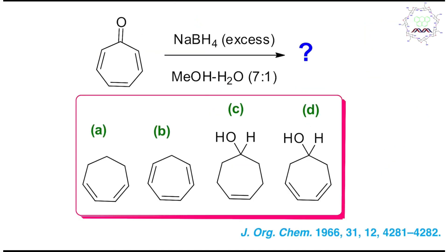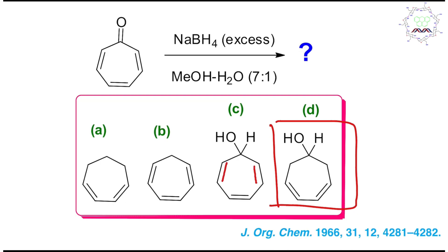So the reaction happens in this way, and ultimately the answer is option D. Now, if this question appears in the exam, how can you solve it in less than 30 seconds? You need to understand where the negative part — the hydride — will attack. A direct carbonyl attack is possible but not mentioned among the options, so you can understand the reactivity is not the same as other simple ketones. The key is understanding the delocalization pattern and where maximum conjugation is maintained.